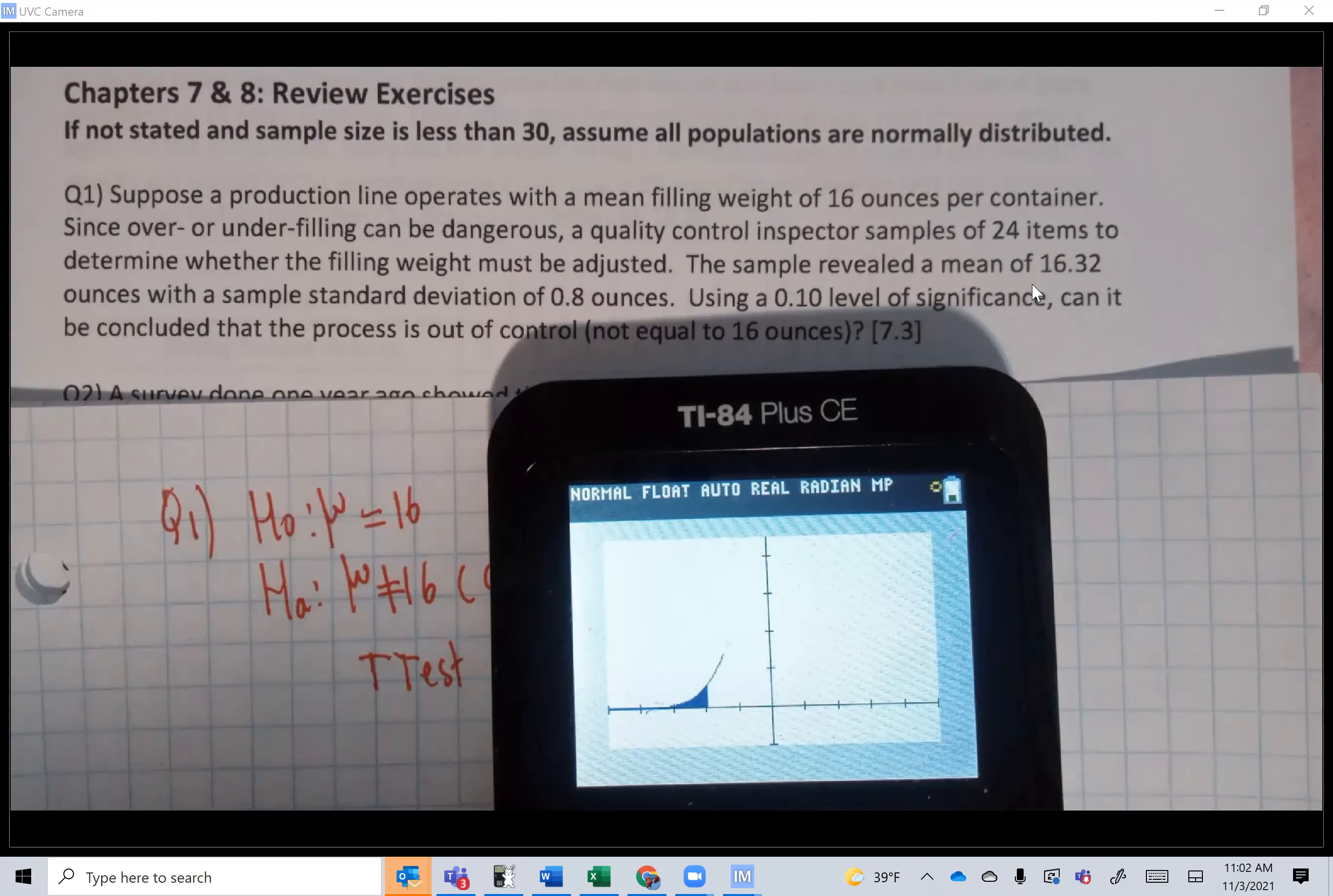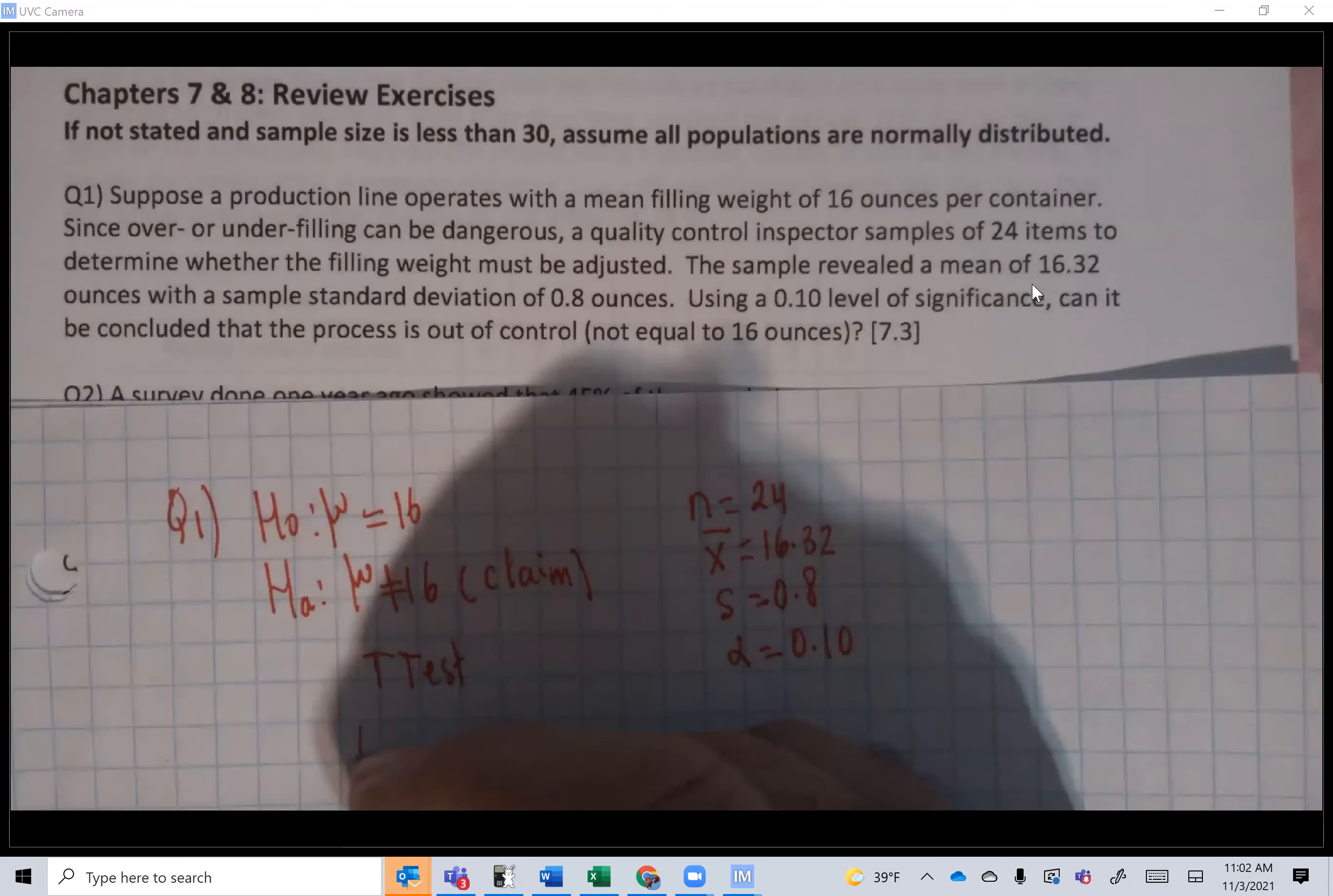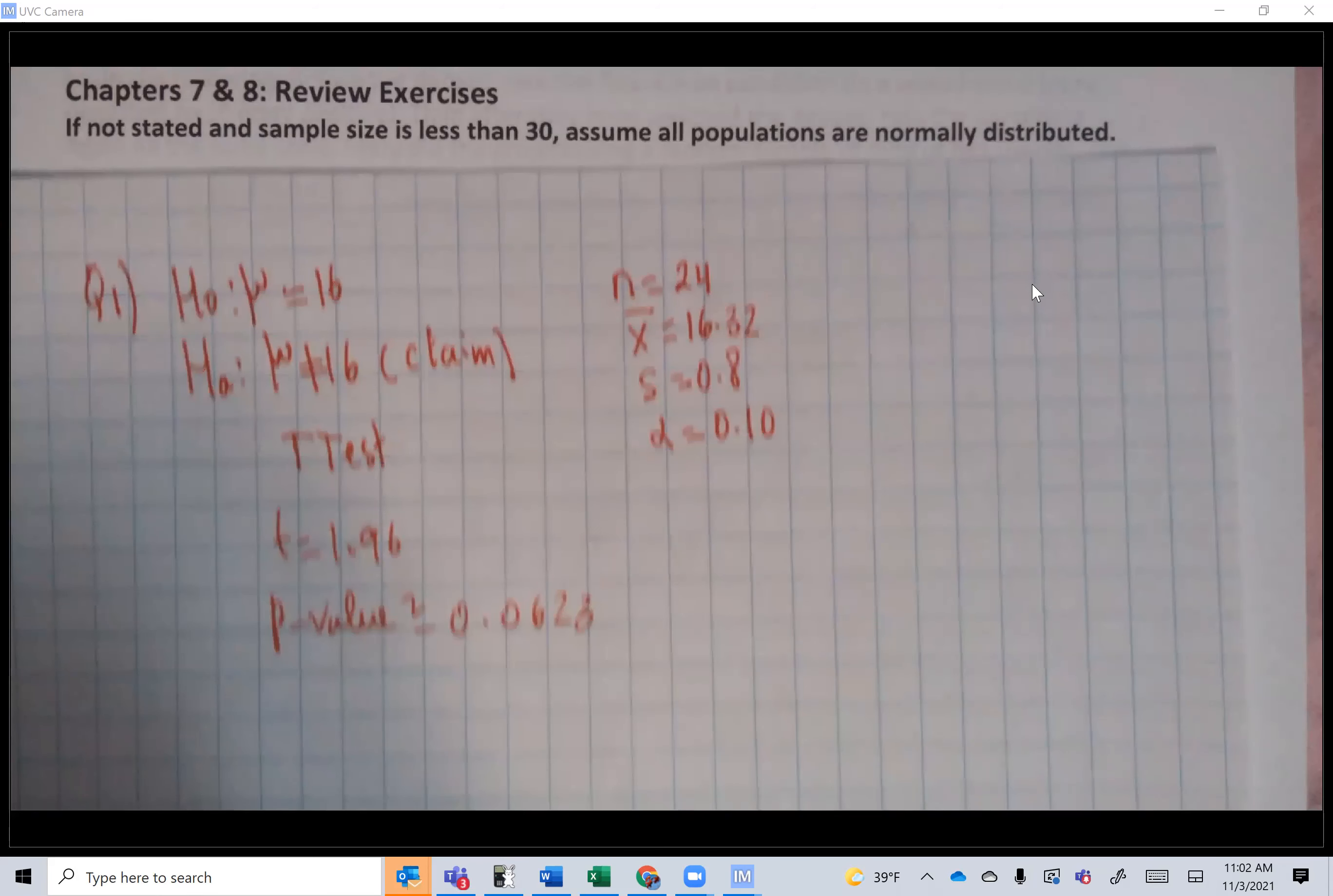There is a large p-value probably. So t is 1.96, and the p-value, as you can see, is 0.0623. Make sure that you can confirm getting the same figures as mine when you do this.